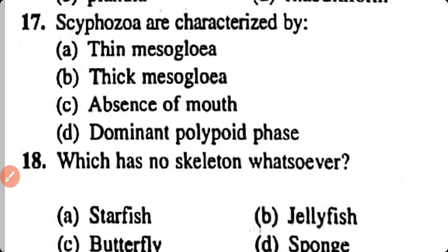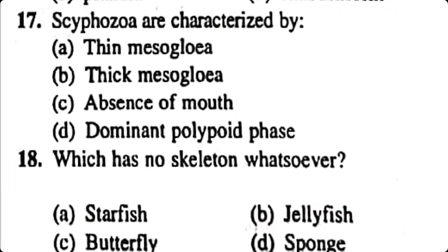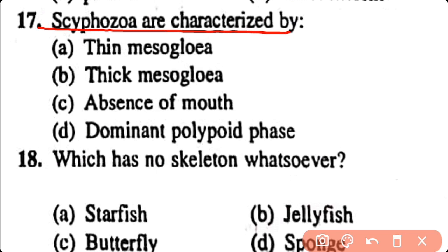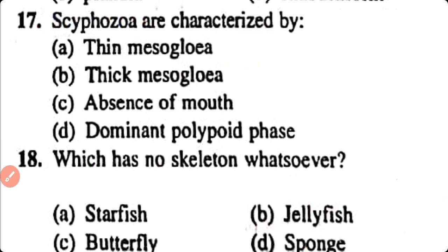Question number 17. Scyphozoa are characterized by: thin mesoglia, thick mesoglia, absence of mouth, dominant polypoid phase. Correct answer is option B. A thick mesoglia is present in class Scyphozoa.